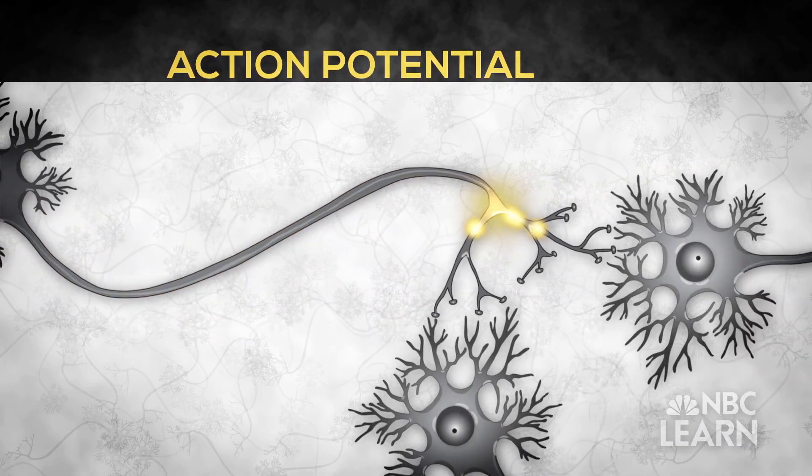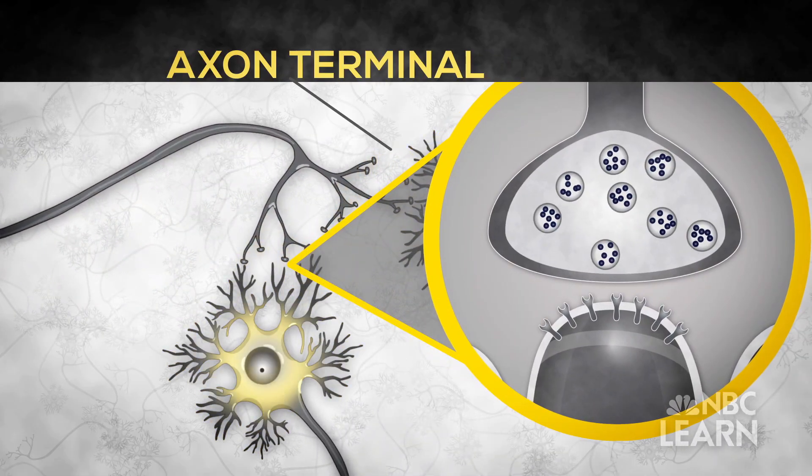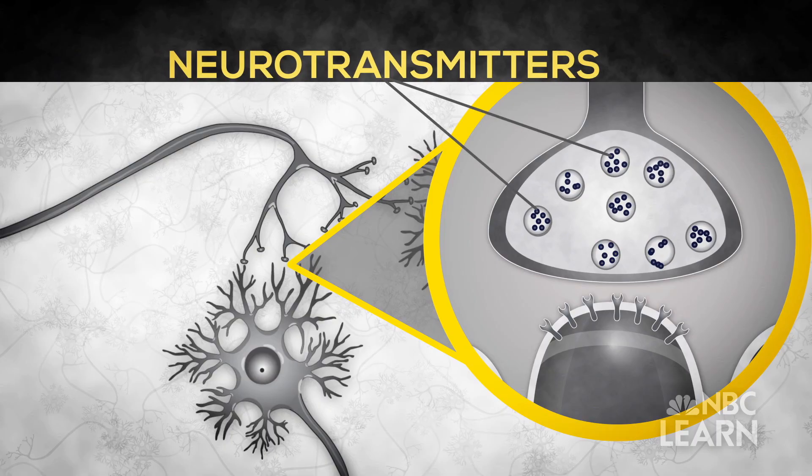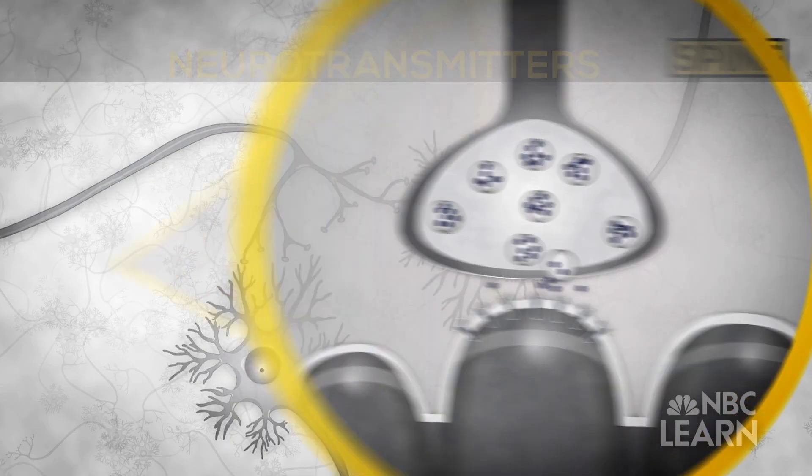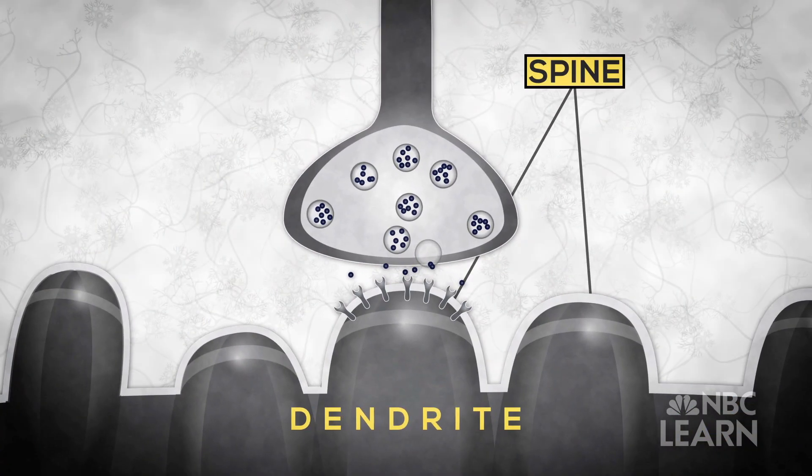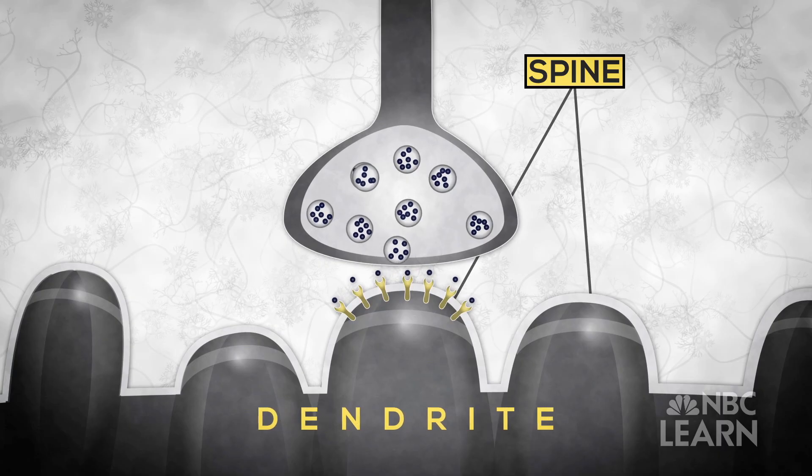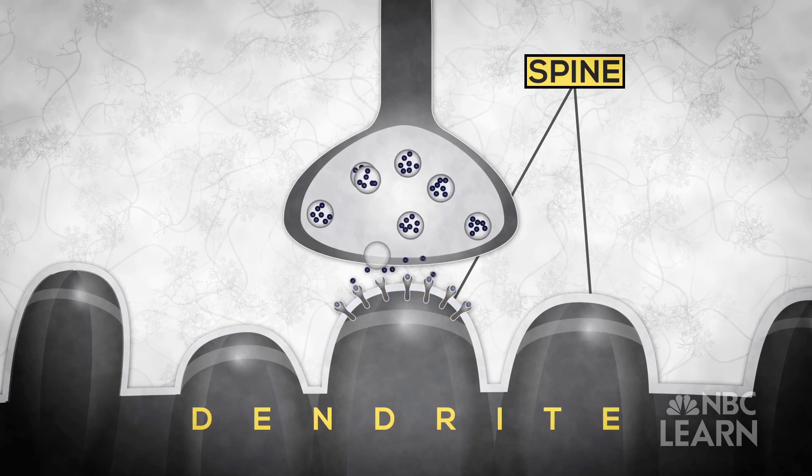releasing chemical neurotransmitters into a minuscule gap. Spines on the dendrites of the listening neuron have special protein receptors that bind with the neurotransmitters. This complex messaging sequence is repeated by the thousands every second.